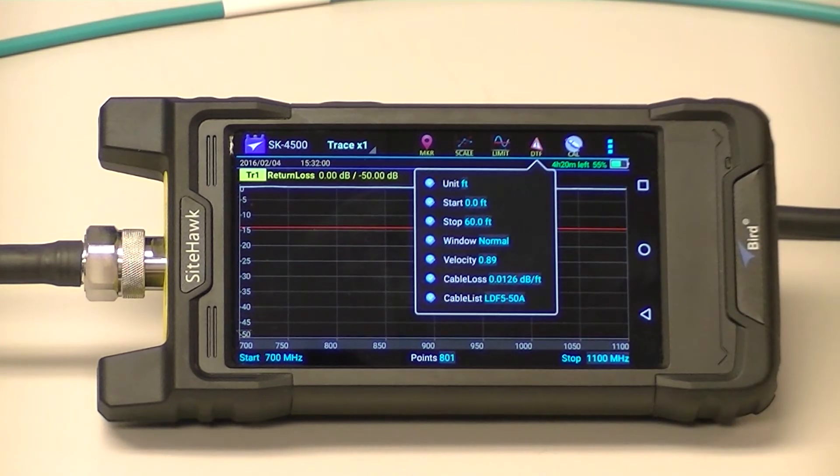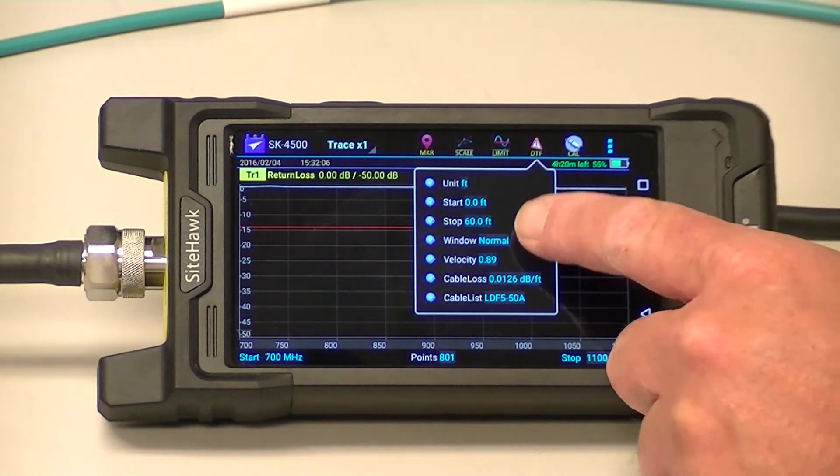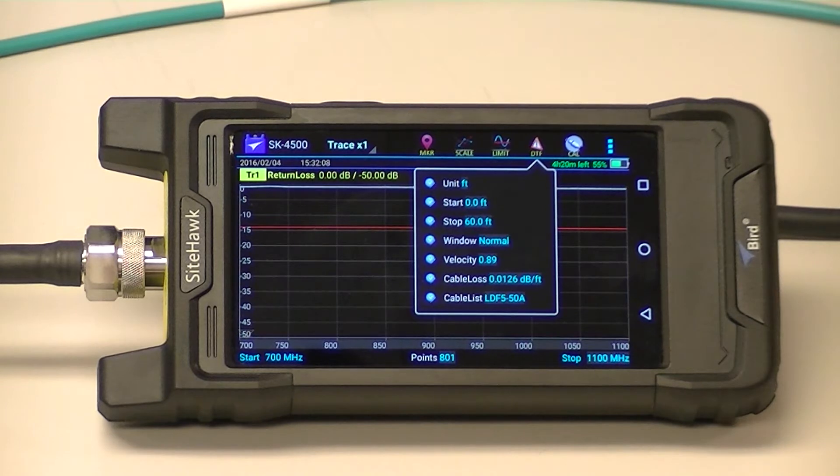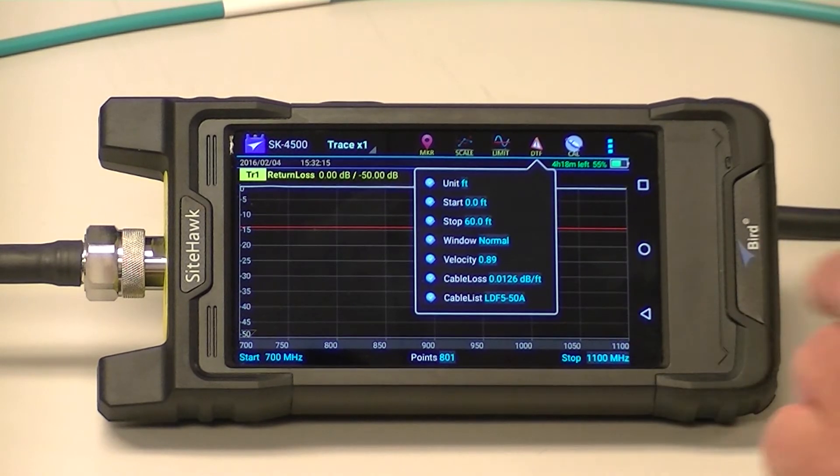If you're doing a distance to fault, you want to set up your DTF units. So my units are in feet, my stop distance is at 60 feet. I have my cable information selected from the cable list. I've selected LDF 558.